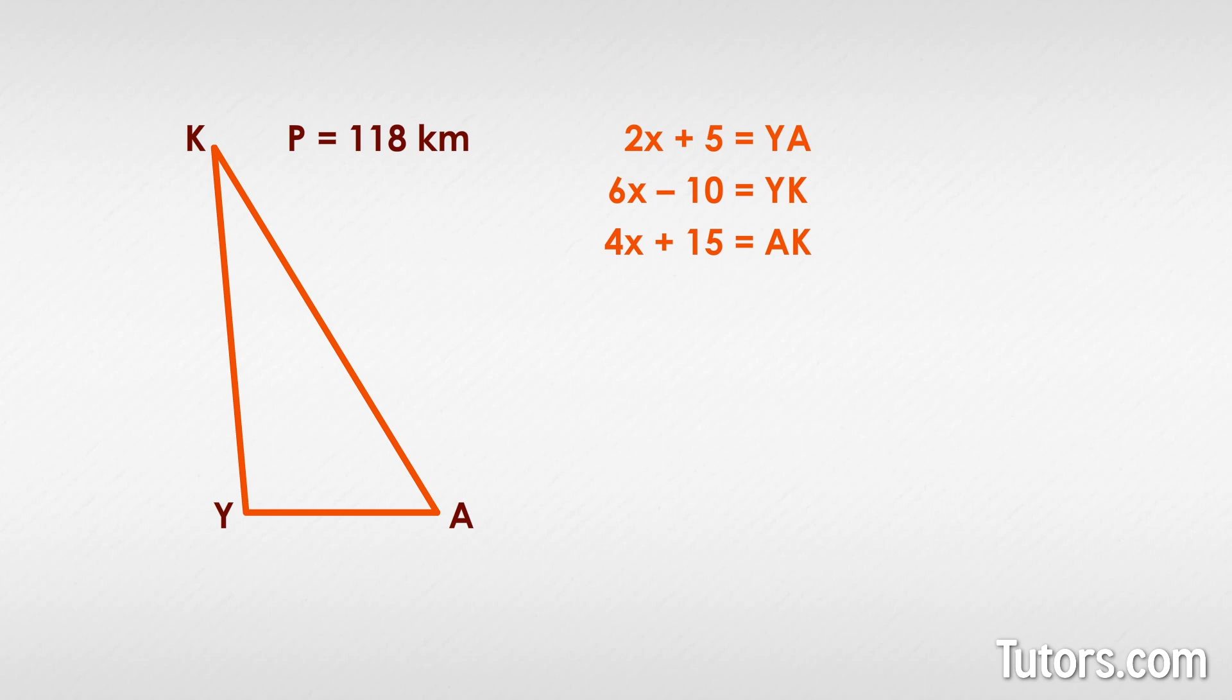Perimeter is the sum of the sides, so if you put these expressions together you get this equation. The first step is to combine terms, which gives you 12X plus 10 equals 118. Next, subtract 10 from both sides to isolate the variable.